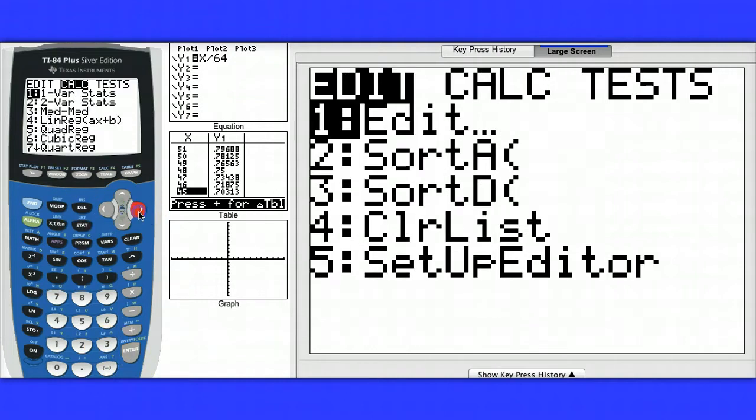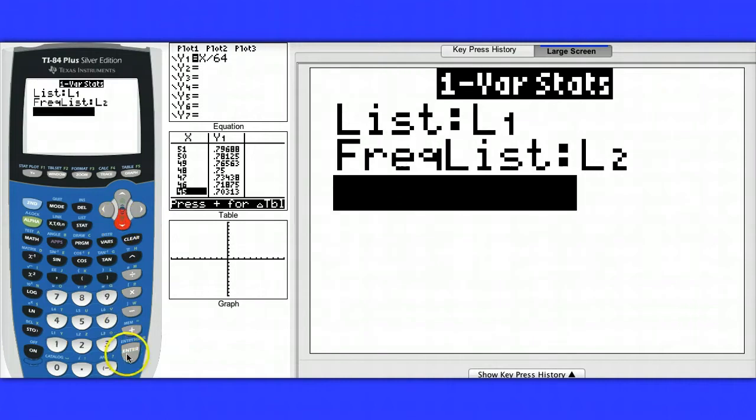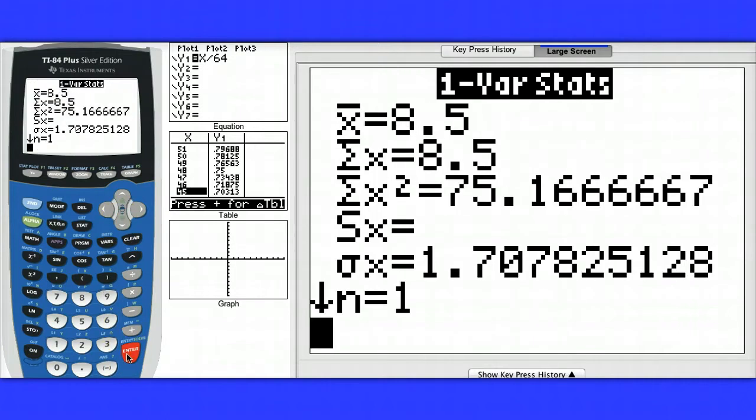So we go to stat, calc, one variable statistics. And I'm guessing because every value in the distribution went up by 5, the mean is going to go up by 5, and it did. But then notice the standard deviation stayed the same.